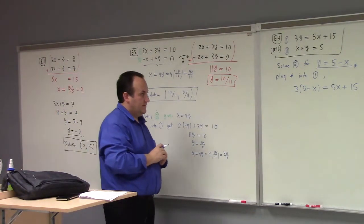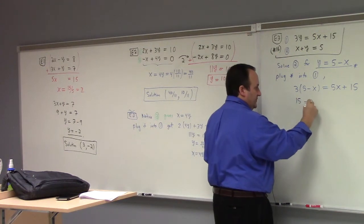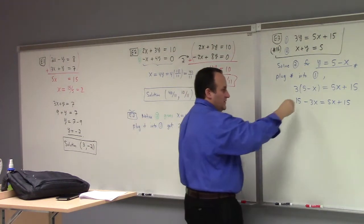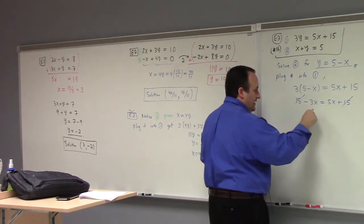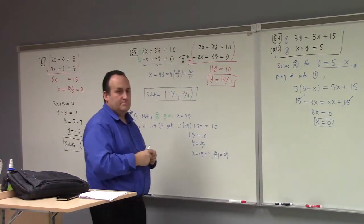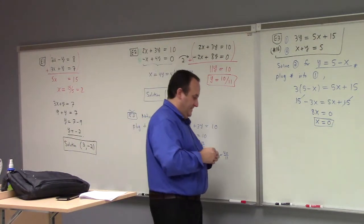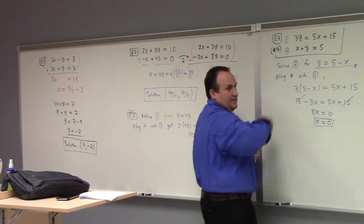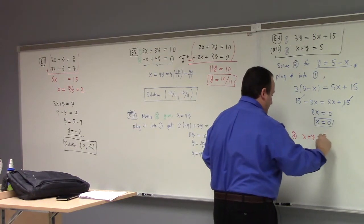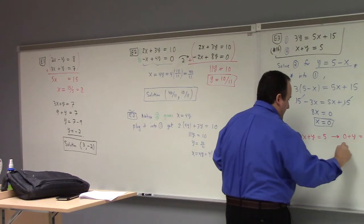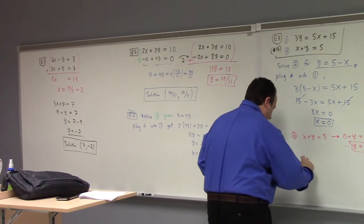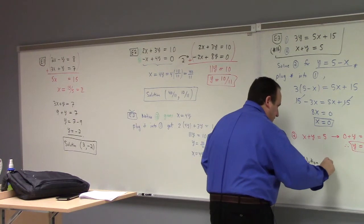That gives me 3 times (5 minus x) equals to 5x plus 15. I get 15 minus 3x equals to 5x plus 15. The 15s cancel, and that gives us 8x equals to 0. So apparently x equals to 0. Then what's y equal to? From equation 2: x plus y equals to 5, and in this context 0 plus y equals to 5, so y is 5. My solution is 0 comma 5.